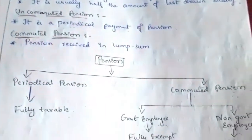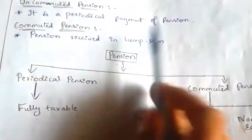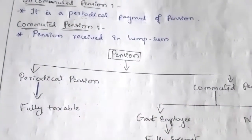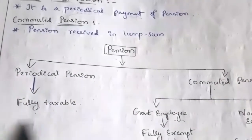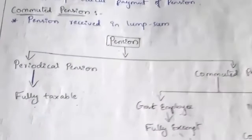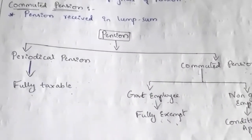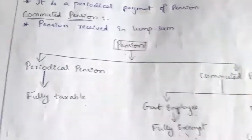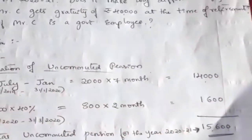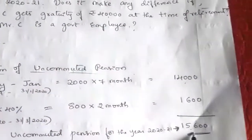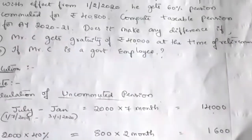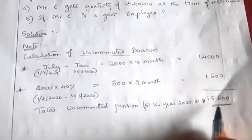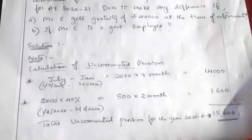Uncommuted pension — the periodical payment of pension — is fully taxable for all employees, whether government or non-government. There is no condition to check whether gratuity was received or not. Whatever uncommuted pension is received is fully taxable. In this question, total uncommuted pension is ₹15,600, which is fully taxable in all three cases.